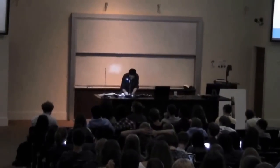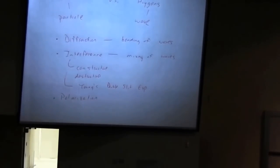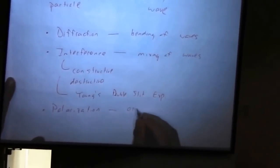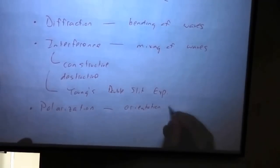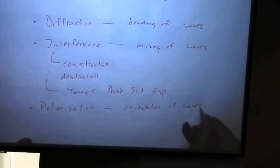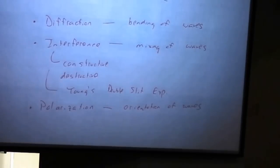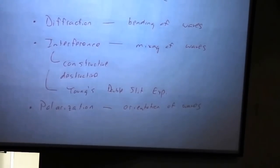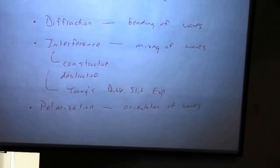The third test is polarization — the orientation of waves. A transverse wave oscillates in a plane: some waves oscillate this way, some this way, some at a 45-degree angle. Light coming from stars usually has all different orientations.